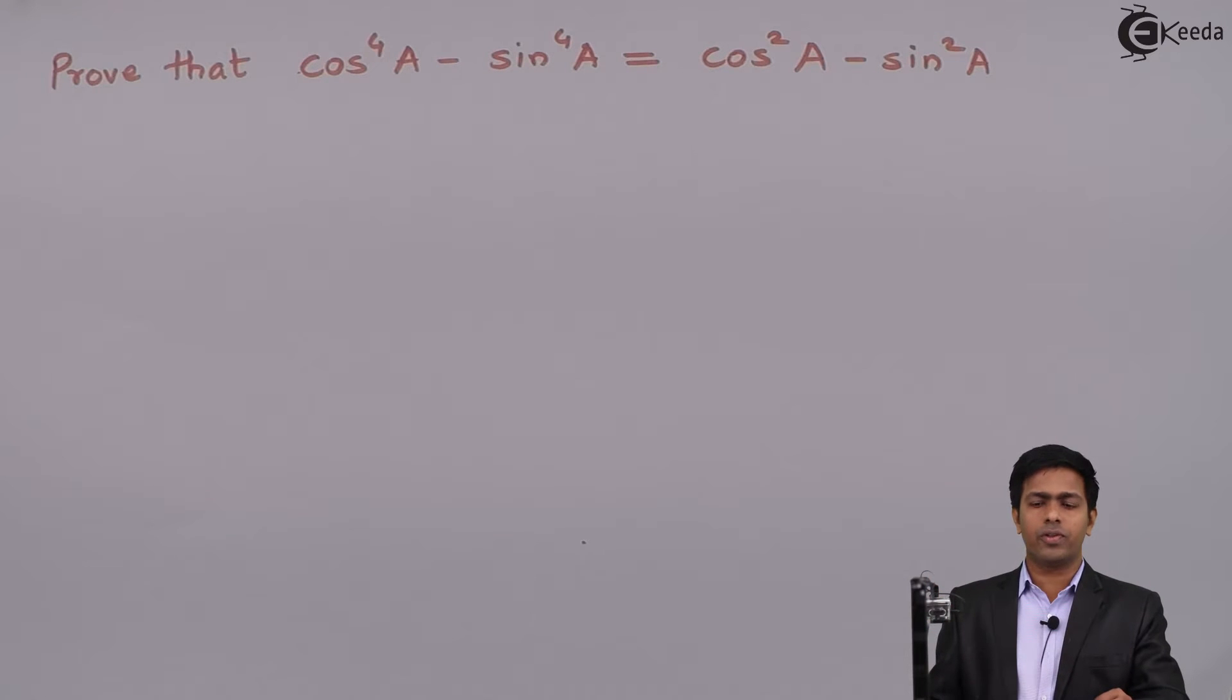Hello friends, so here we have to prove that cos raised to 4A minus sin raised to 4A is equal to cos square A minus sin square A.